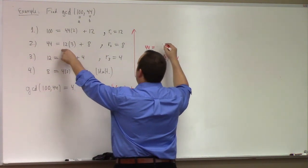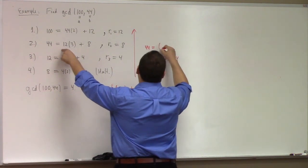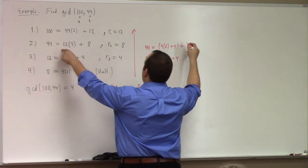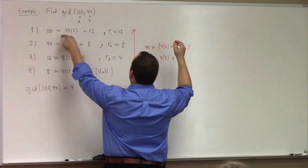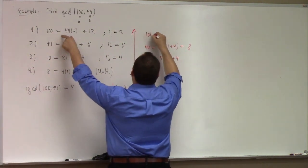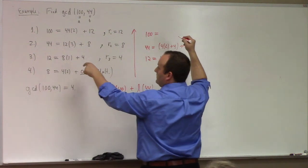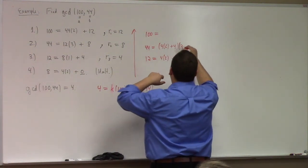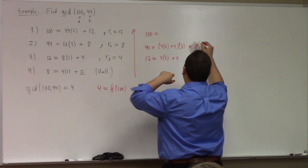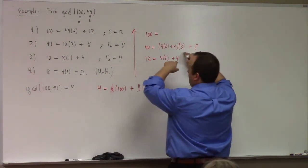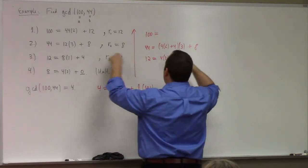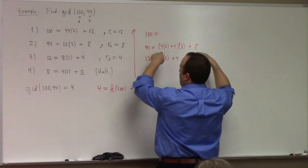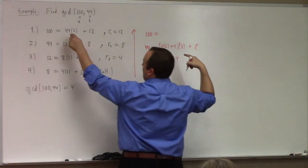Start with 4 equals 12 minus 8 times 1. And then: 4 equals 12 minus (44 minus 12 times 3) times 1, which equals 12 times 4 minus 44. So 4 equals 4 times 12 minus 44.